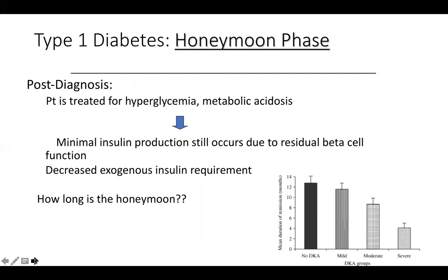After somebody is diagnosed, there is a period called the honeymoon phase — a transient restoration of beta cell function. It usually happens after the patient has started insulin therapy. Maybe they've been diagnosed with type 1 diabetes or are in the hospital for DKA. They'll probably need a lot of insulin initially, but over a couple of weeks they may find they need less and less insulin — almost a rebound of the beta cells.